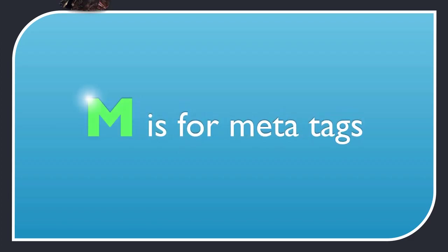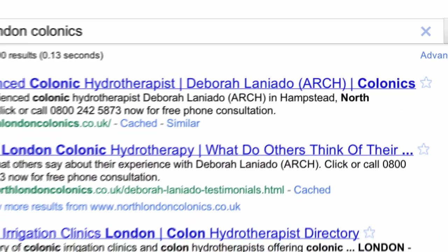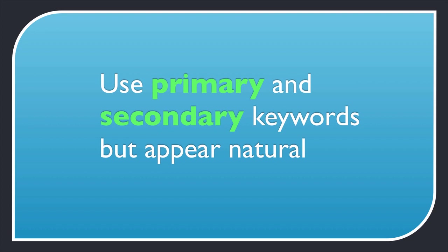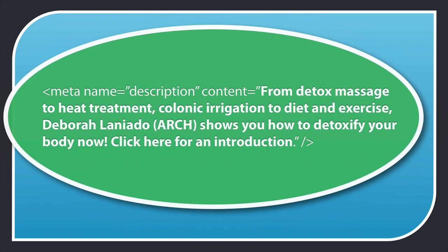M is for meta tags. We'll begin with the meta description tag. Google will tend to use your meta description tag when giving a summary of your site on its results page if it contains the search query. So use your primary keywords in the description, working in one or two secondary keywords if you can, but above all appear natural. Length should be 25 to 30 words and about 160 to 180 characters total including spaces. The description tag must make sense to a reader, reinforce the title tag and provide more detail. Put your primary keyword near the front.